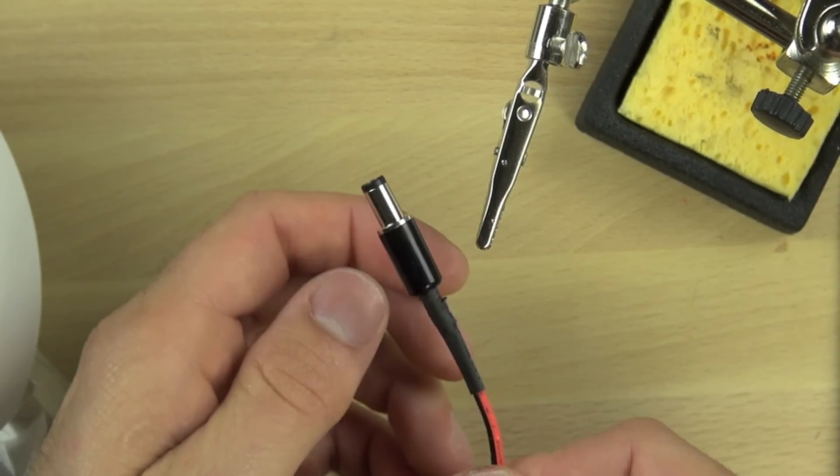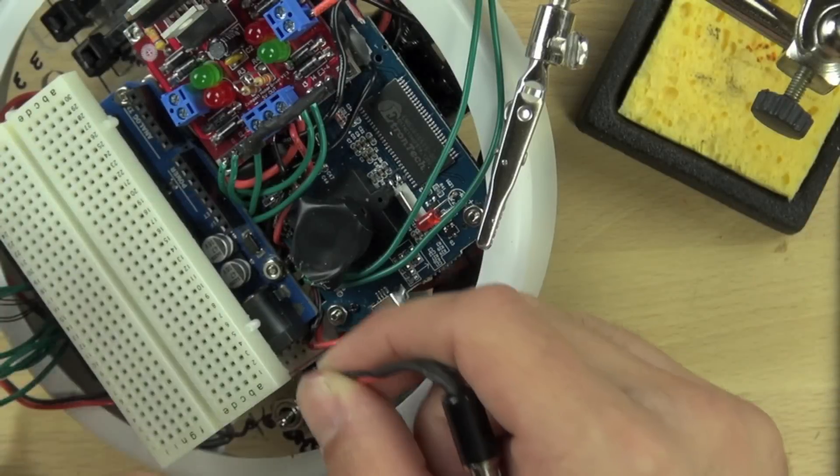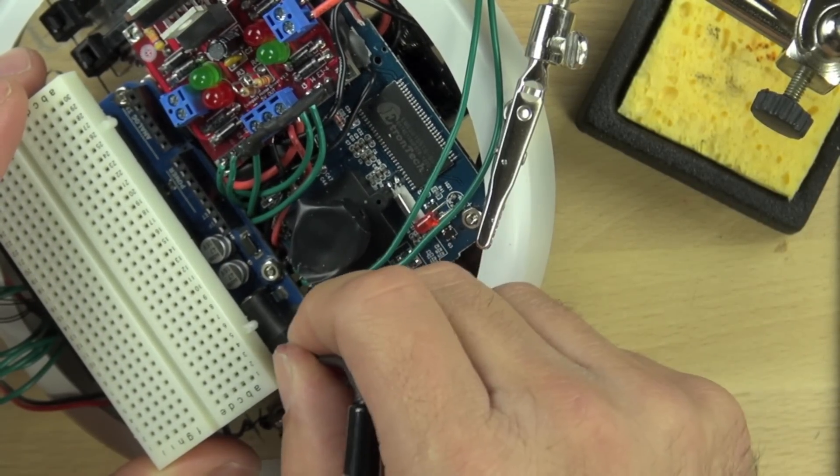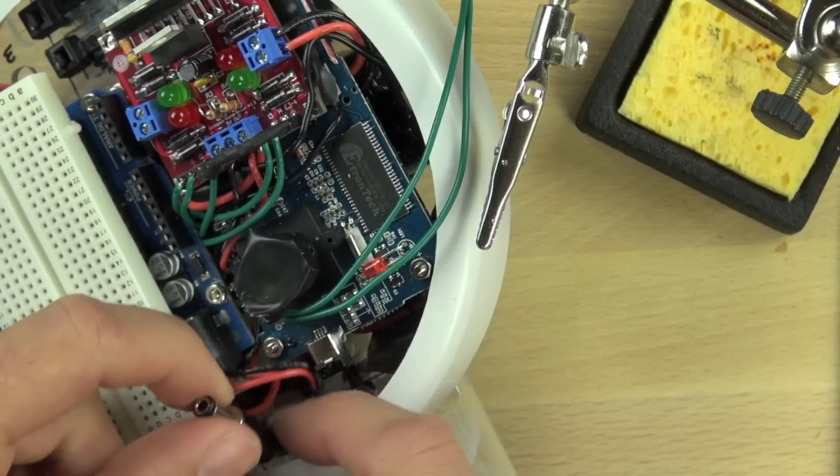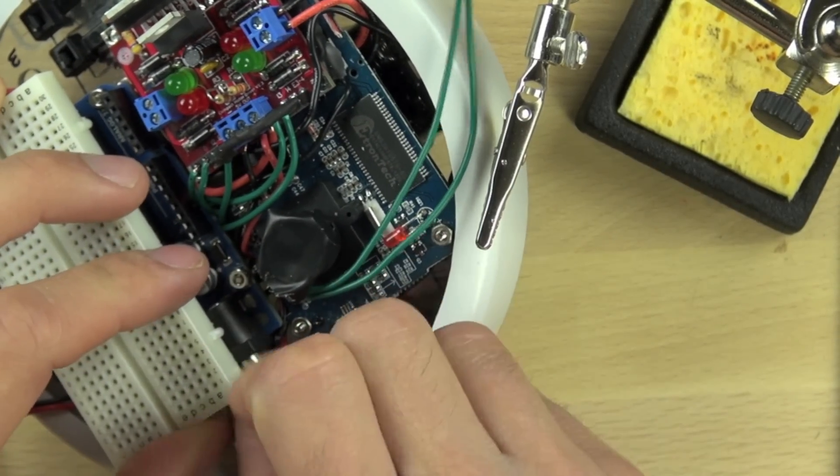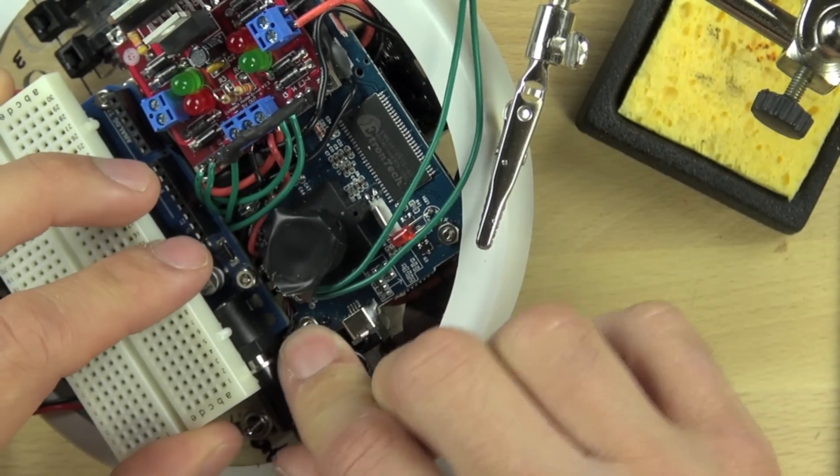We're going to take the bottom of the wires and insert them into our 5 volt power strip. The positive wire goes on the positive side, the negative to the negative side. Then we're going to loop the wires around and connect our connector to our Arduino.